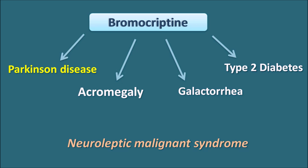Bromocriptine is used off-label for the treatment of Neuroleptic Malignant Syndrome — a syndrome caused by neuroleptics (antipsychotics) which cause motor disturbances that can be treated by Bromocriptine. In this way, Bromocriptine is a drug with multiple clinical uses.